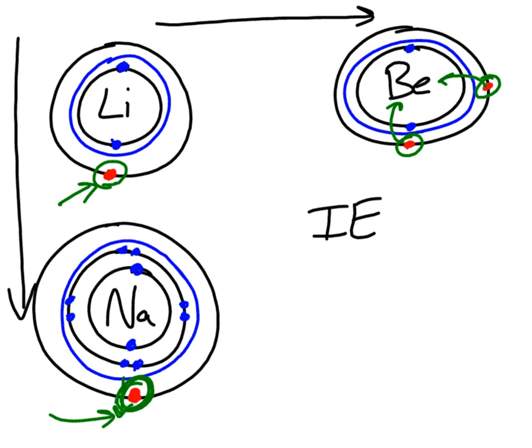The same reasoning applies to atomic radius. If I go down a group — from lithium to sodium — the electrons are farther away from the nucleus, and the reason is the greater shielding going on in sodium compared to lithium. As the valence electron is being pushed away, it gets farther and farther from the nucleus, which causes the atomic radius to get bigger. Lithium doesn't have as much shielding, so the nucleus isn't as shielded from the valence electron as sodium's is.